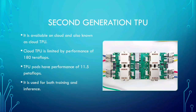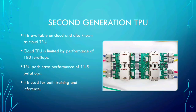Second generation TPU. The second generation TPU was announced in May 2017. It is now available in cloud, also known as Cloud TPU, and supports both training and inference. Google stated the first generation TPU design was limited by memory bandwidth, and using 16 GB of high bandwidth memory, the second generation design increased bandwidth to 600 GB per second and performance to 45 teraflops. The TPUs are arranged into four-chip modules with a performance of 180 teraflops, then 64 of these modules are assembled into 256-chip pods with 11.5 petaflops of performance. While the first generation TPUs were limited to integers, the second generation TPUs can also calculate in floating point, making them useful for both training and inference. Google has stated these second generation TPUs will be available on the Google Compute Engine for use in TensorFlow applications.